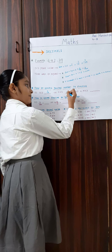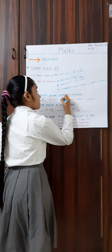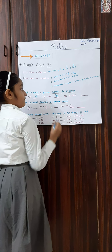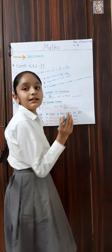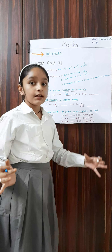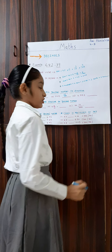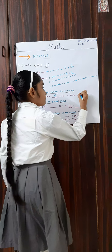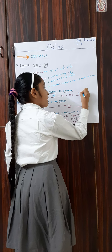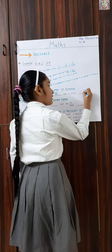Similarly, 0.65 becomes 65 upon 100. And when there is a whole number part, we write a mixed fraction — for example, 4.753 becomes 4 whole 753 upon 1000.